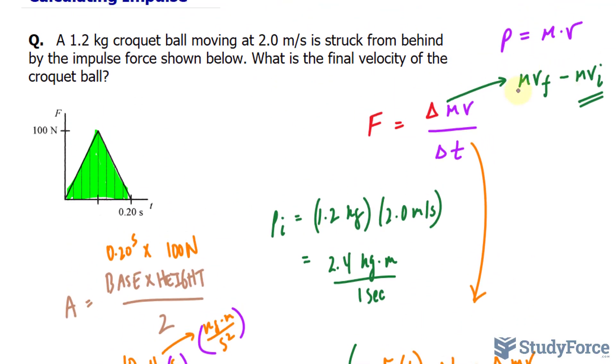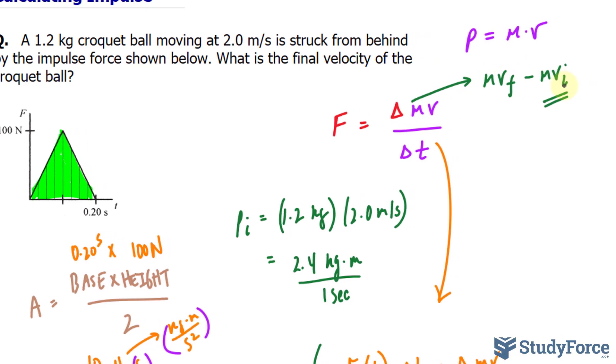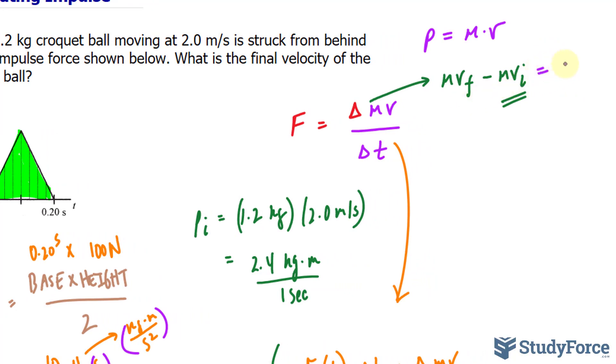Looking back here, remember delta MV represents MV final minus MV initial. Therefore, this should equal 10. We already found MV initial to be 2.4. So I have MV final minus 2.4 equals 10.